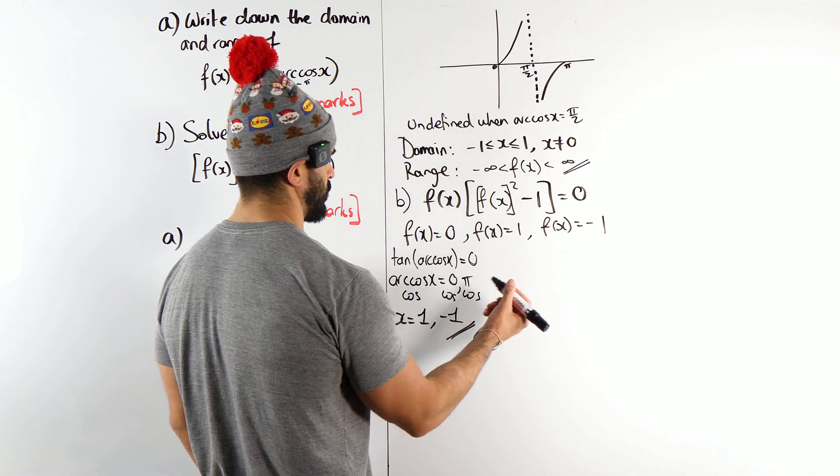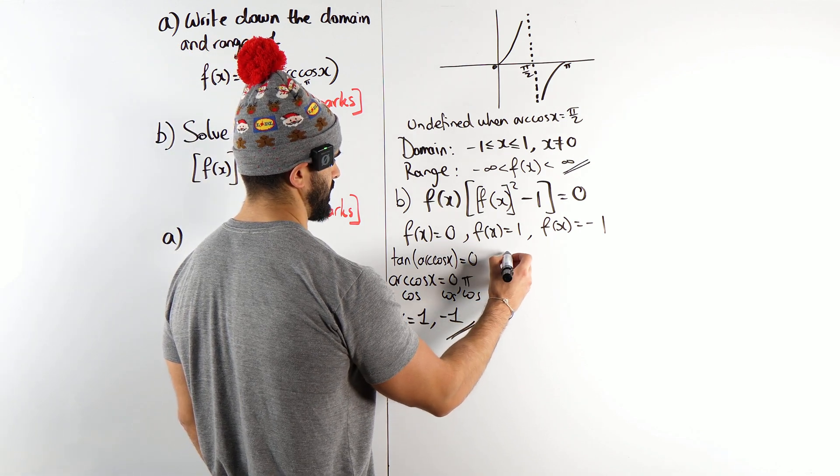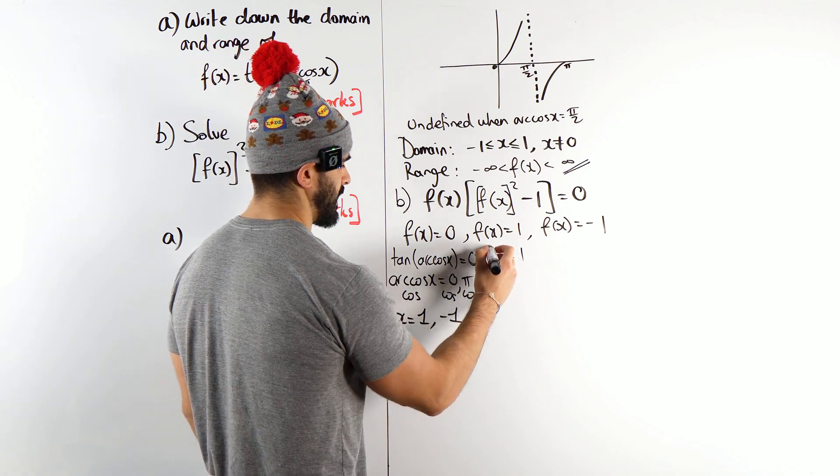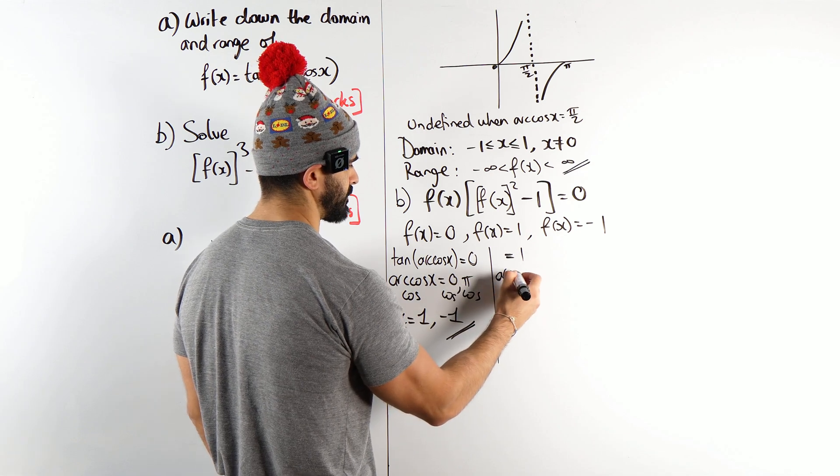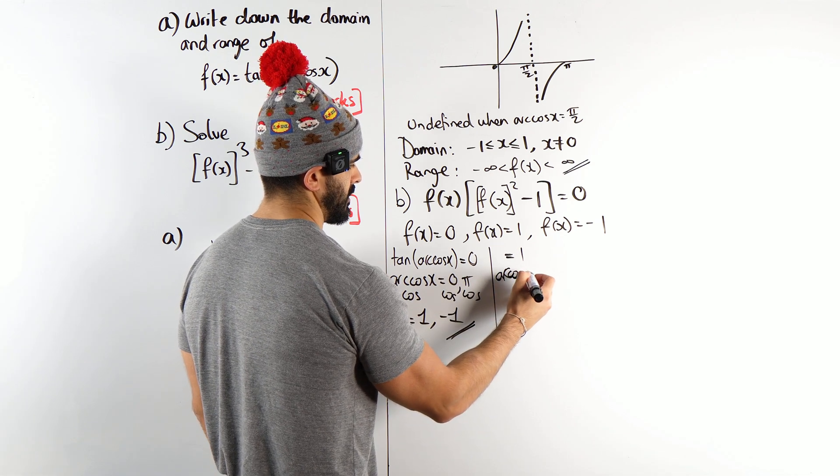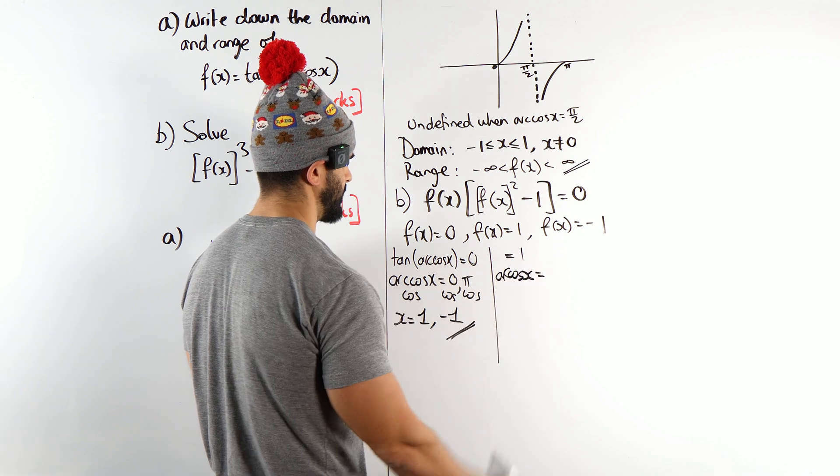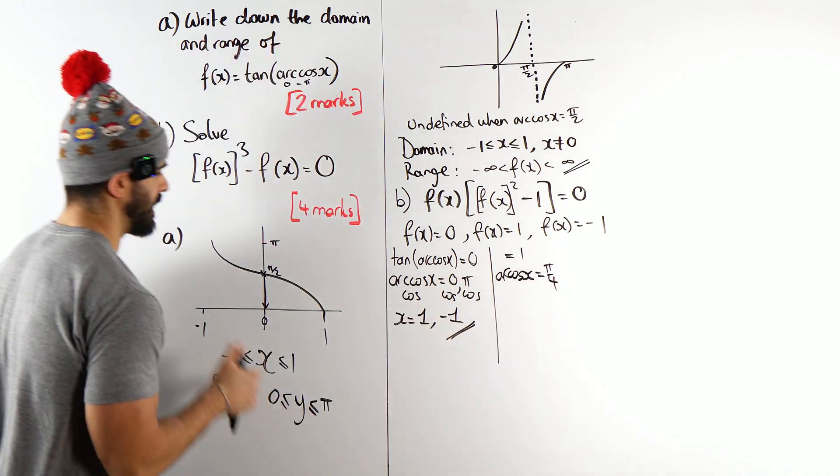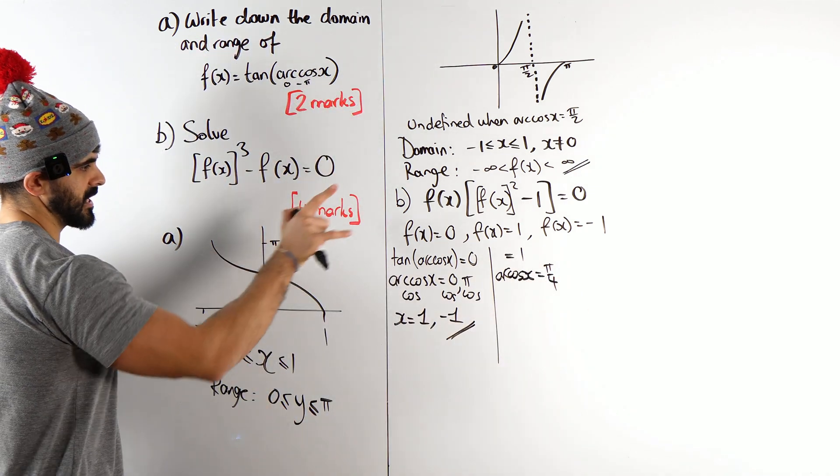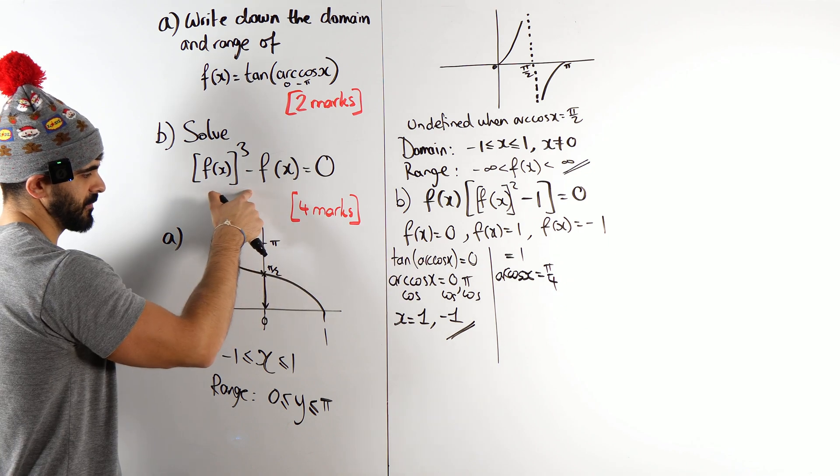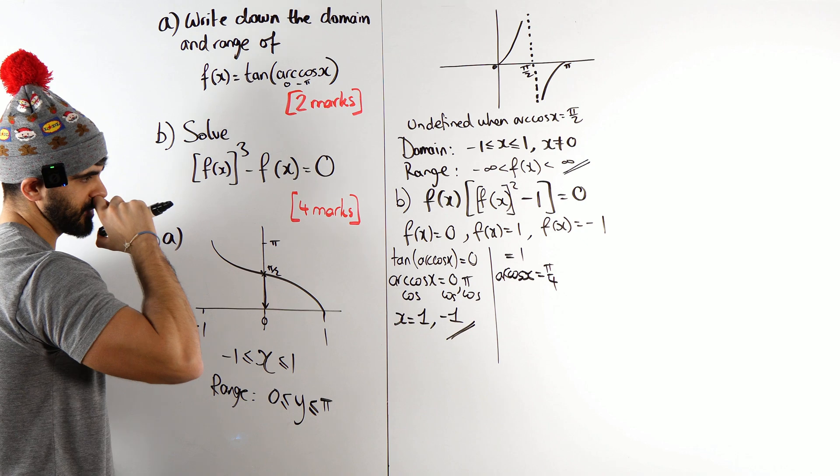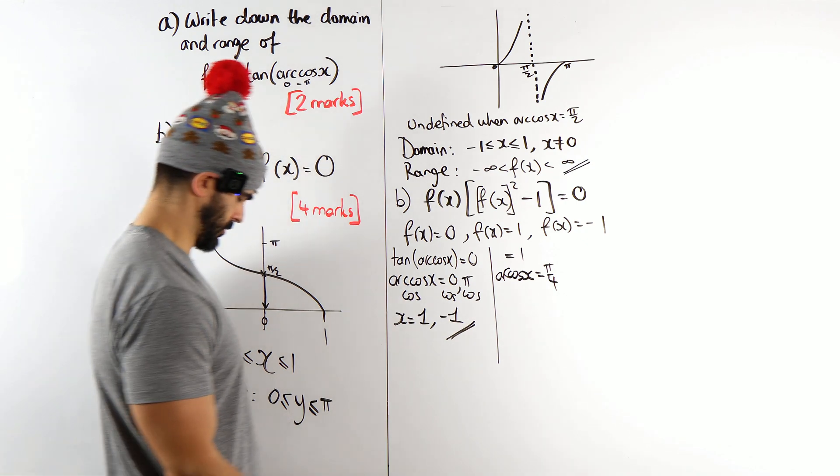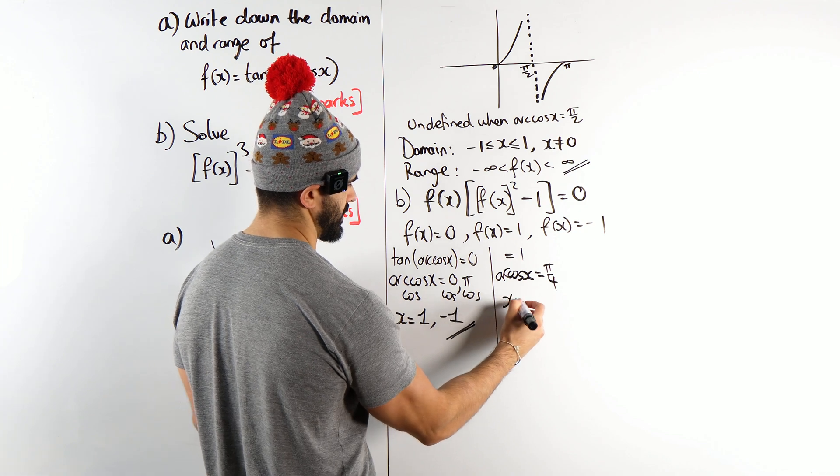Then we've got equals one. I'm actually just going to look at this as one. So I'm going to do inverse tan of one. I get arccos(x) is inverse tan of one, which is pi over four. Now remember, I'm keeping things between zero and pi. So I'm not going to add pi to that because you're going to come over. So I'm going to cos both sides. Cos of pi over four is root two over two. So x is root two over two.